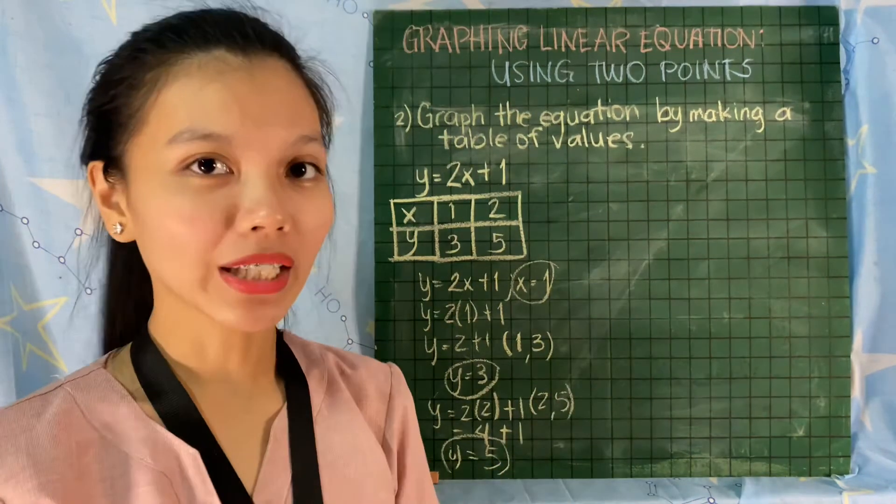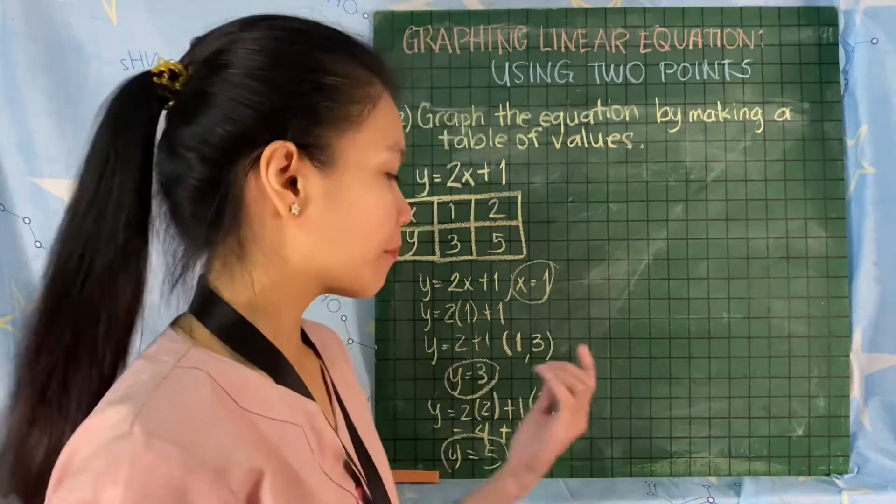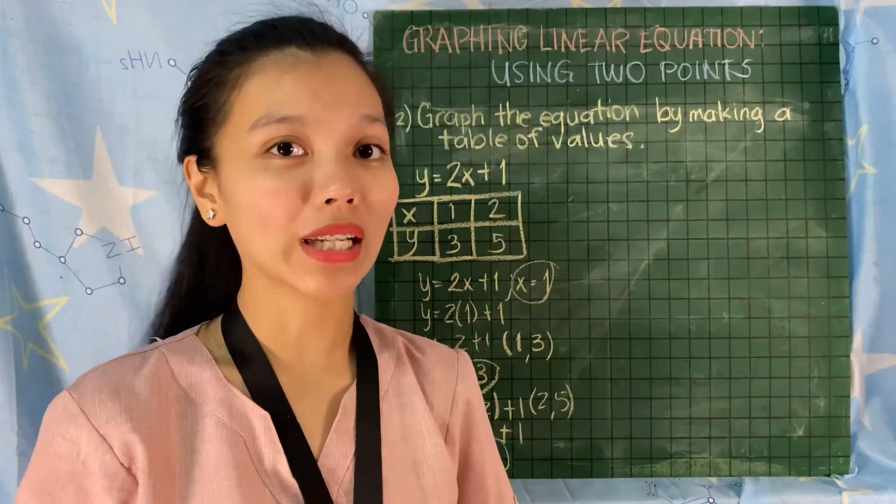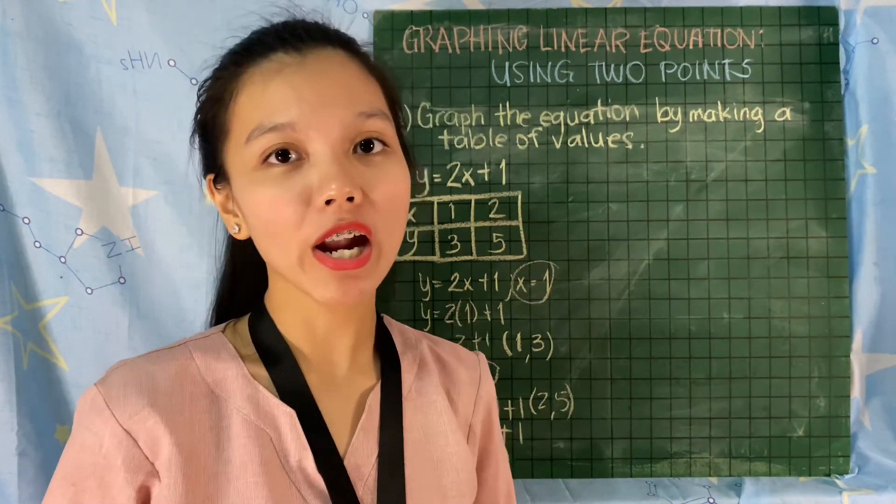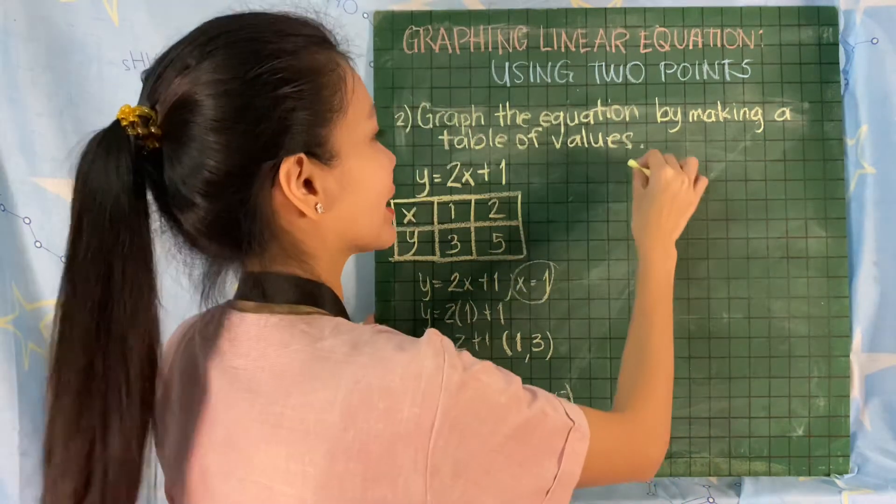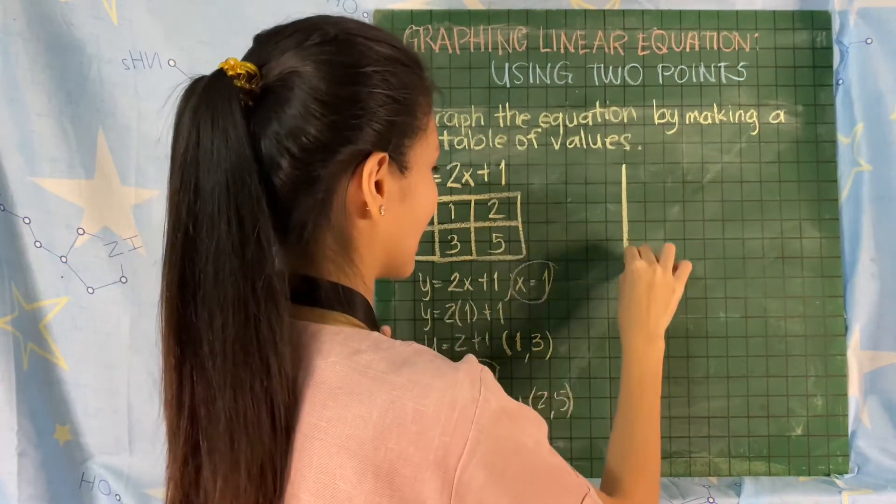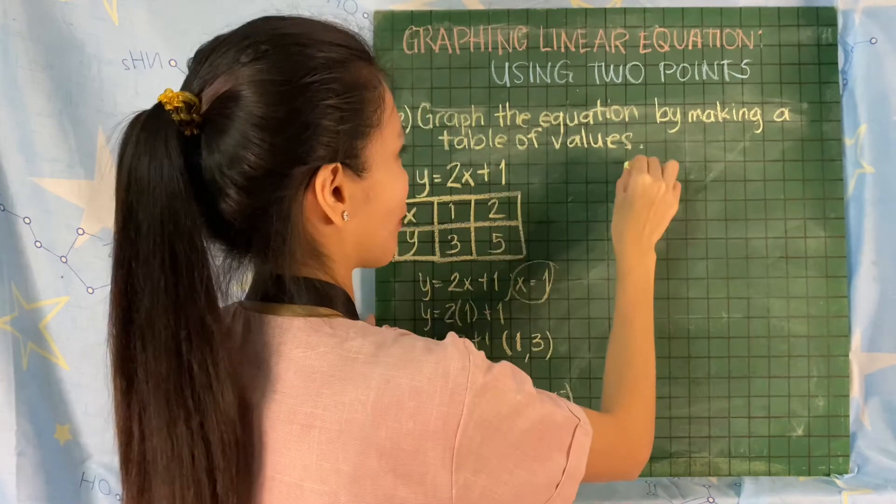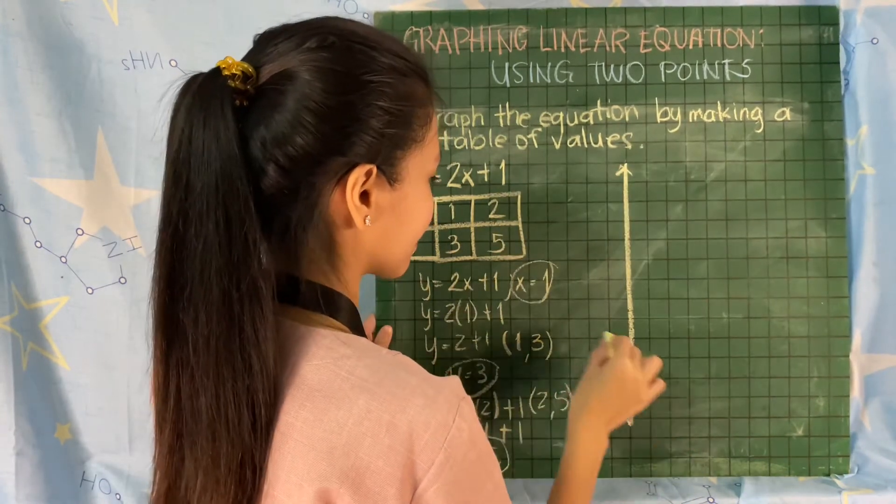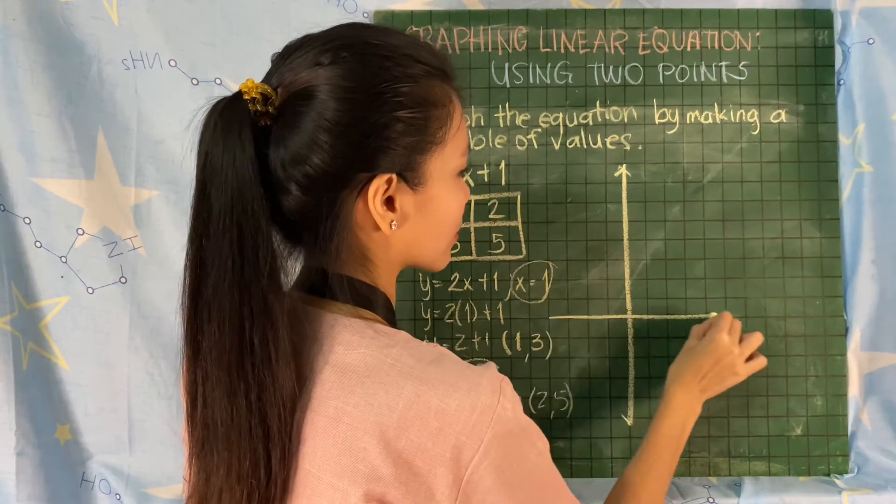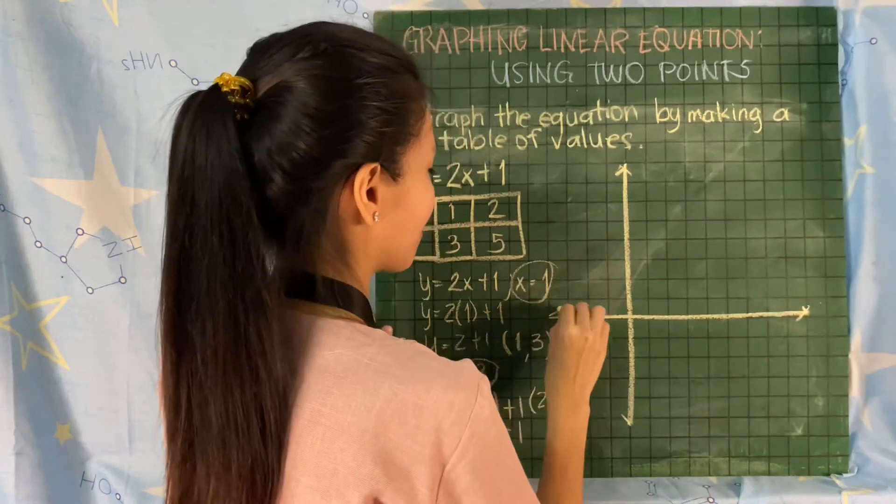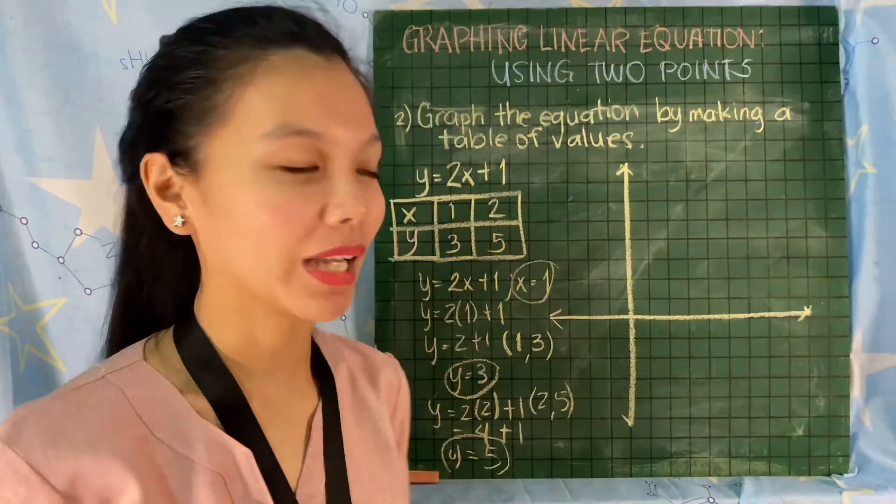Now we can graph it. As you can see, it's mostly in quadrant 1, because all of the points are positive. We'll make the space of our quadrant 1 larger. It depends on where we have more points, where we will see more points.